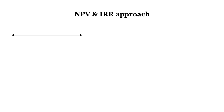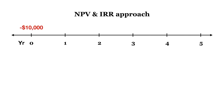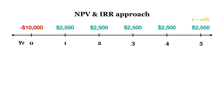A project will initially cost $10,000. However, the project is estimated to generate $2,500 each year for 5 years. The discount rate the firm uses is 12%, as this project is similar to projects that the firm usually takes on. Calculate the NPV and find out the internal rate of return for the project.